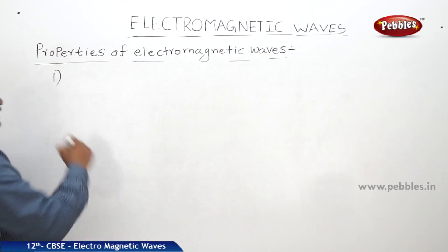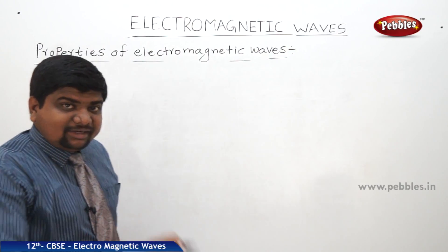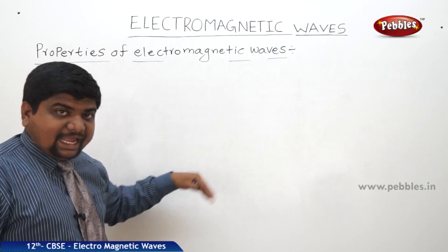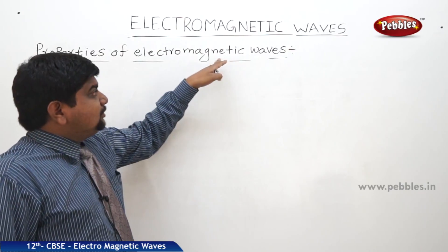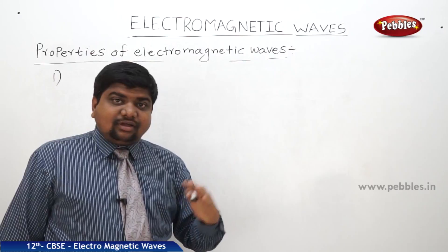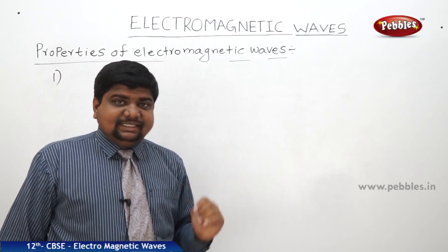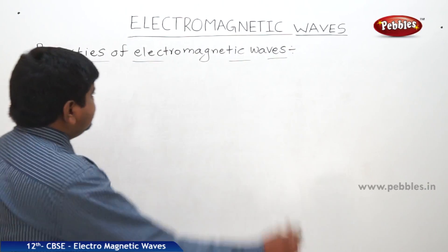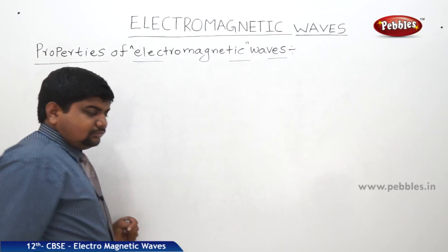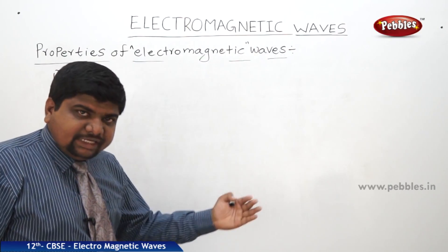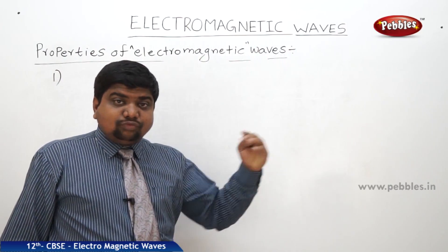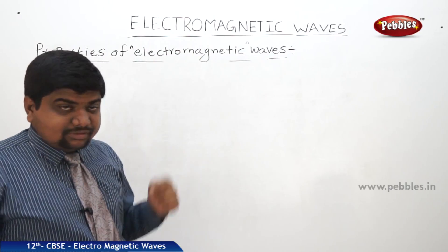We know that static electrons can produce electric fields, and accelerating charged particles produce magnetic fields. But these two fields are not time-variant. So how do we produce an electromagnetic wave? Neither the moving nor the steady charge alone can produce electromagnetic waves — so which one can?